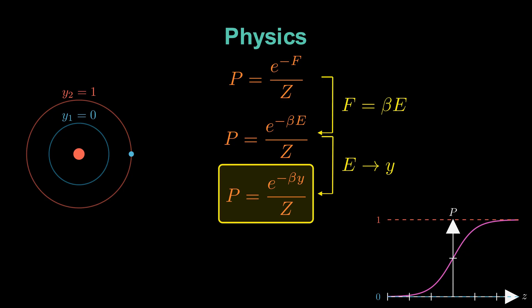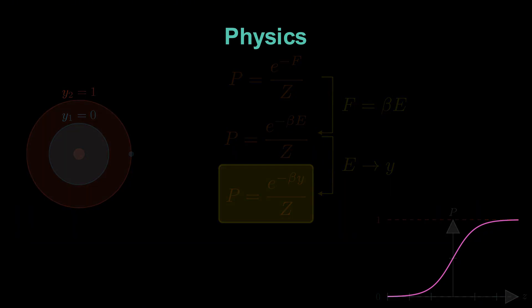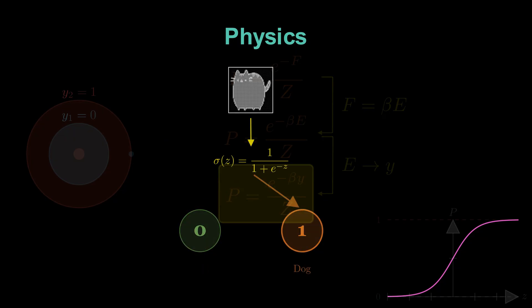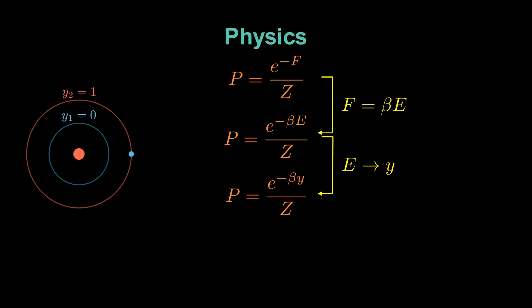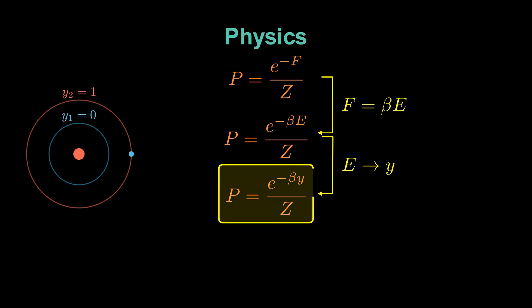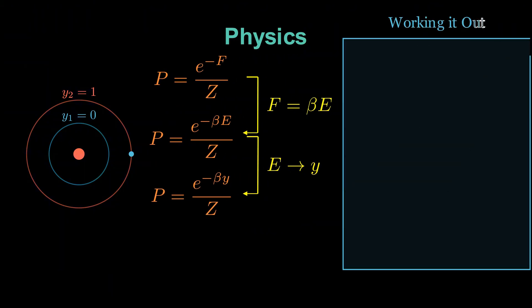At this point, the question is, how can this physical probability describe how a machine learning model classifies images? Let's find out. To make the bridge clearer, let's compute everything explicitly. We start again from our probability. We said Z is the normalization factor, the sum of all possible numerators over the possible values of Y. Since Y can only be zero or one, that means we just need to plug them into the sum and find the partition function.